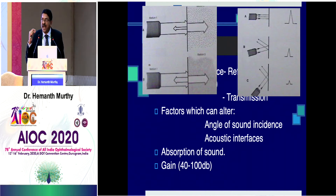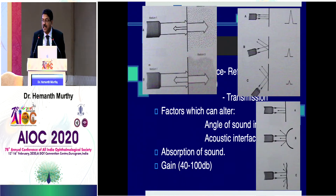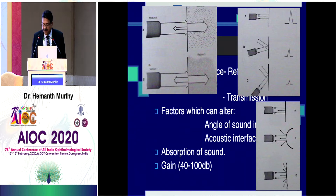If the sound beam is perpendicular to the tissue you want to detect, reflectivity is always the highest. If it is at an angle, it will reflect away from the probe and you won't get good reflectivity. A regular surface gives the highest reflectivity; an irregular surface causes the sound to get deflected back.